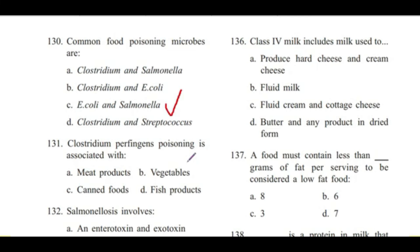Question 131: Clostridium perfringens poisoning is associated with — wheat products, vegetables, canned foods, or fish products? Answer is A, wheat products.